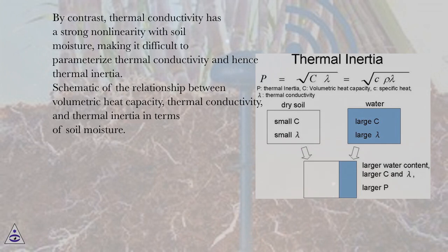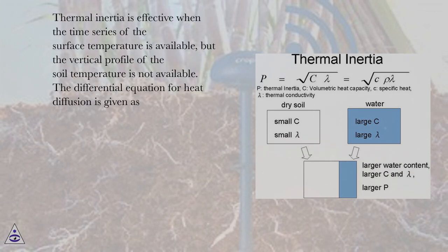Schematic of the relationship between volumetric heat capacity, thermal conductivity, and thermal inertia in terms of soil moisture. Thermal inertia is effective when the time series of the surface temperature is available, but the vertical profile of the soil temperature is not available.